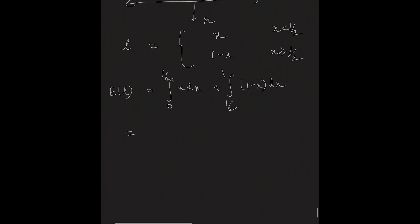which is equal to x square by 2 from 0 to half plus x minus x square by 2 from half to 1.